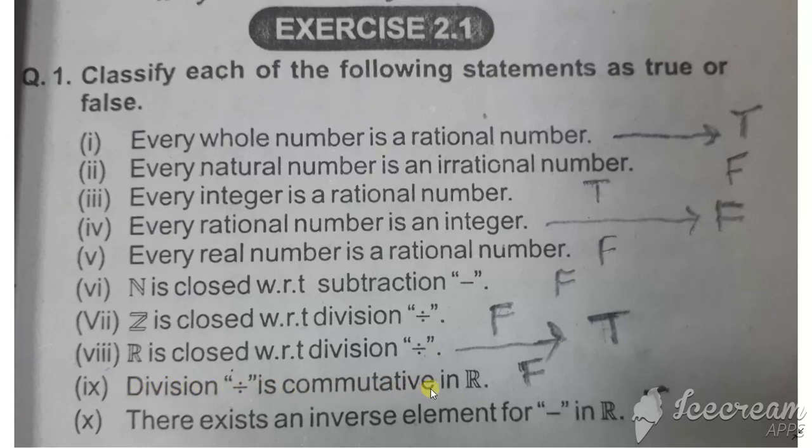Statement nine: Division is commutative in R. Commutative property does not hold for division. For example, 5 divided by 5 is not the same as changing the order. Division is not commutative, so this is false.